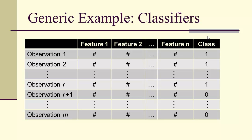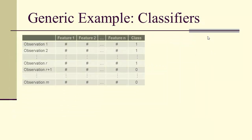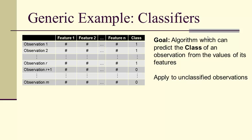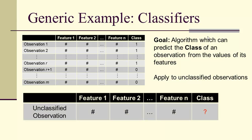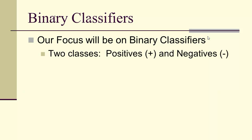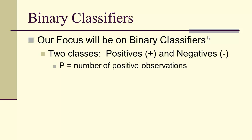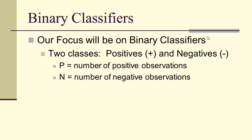Let's go back and remember classifiers. We are going to look at binary classifiers where we have two classes. Our goal is to predict the class of an observation from the values of its features. This is often called supervised learning. So two classes: positives and negatives. Capital P will be the number of positives, capital N the number of negatives.